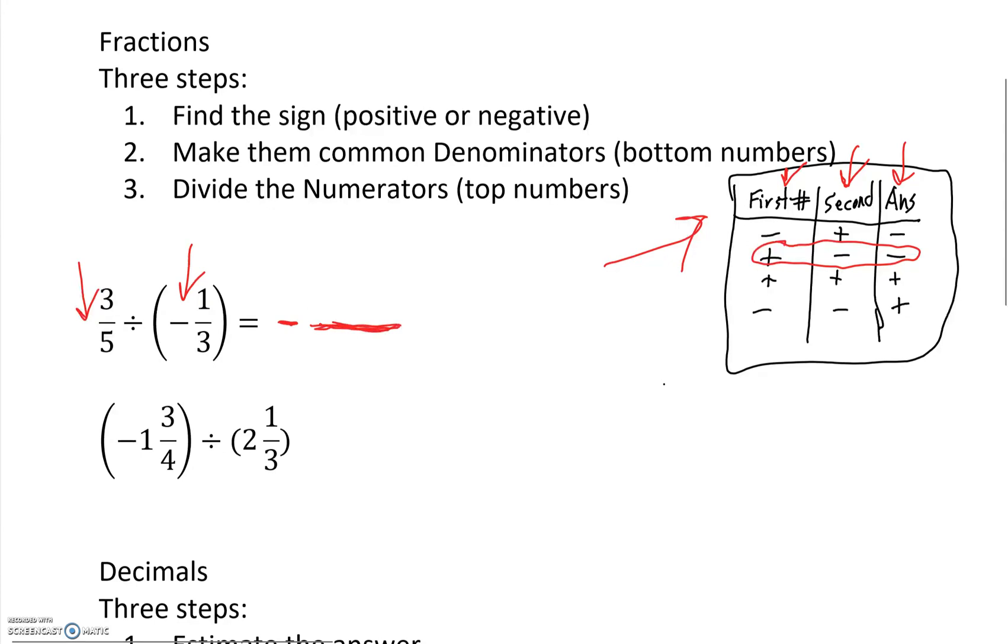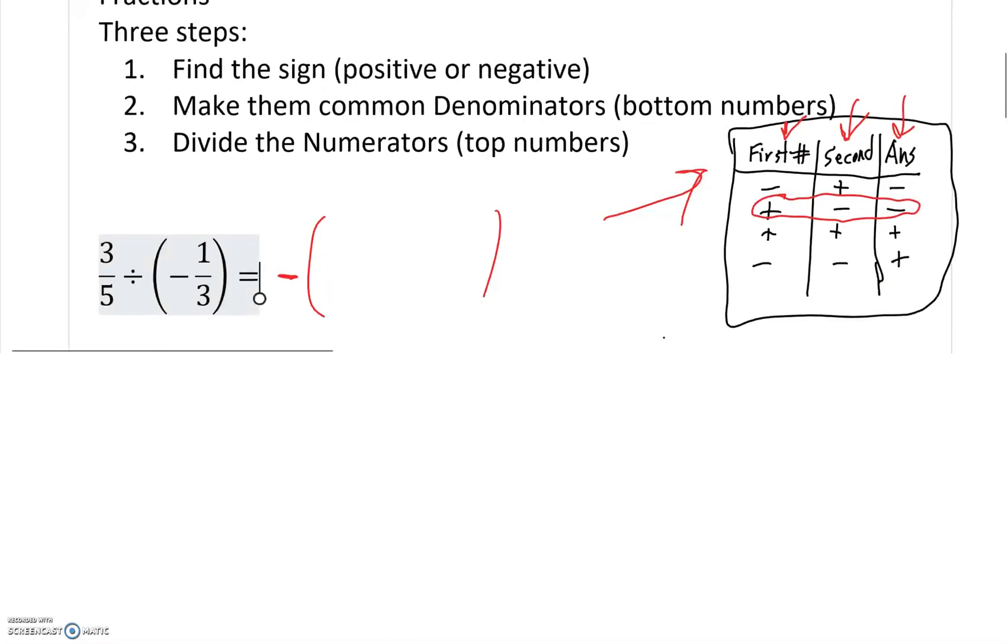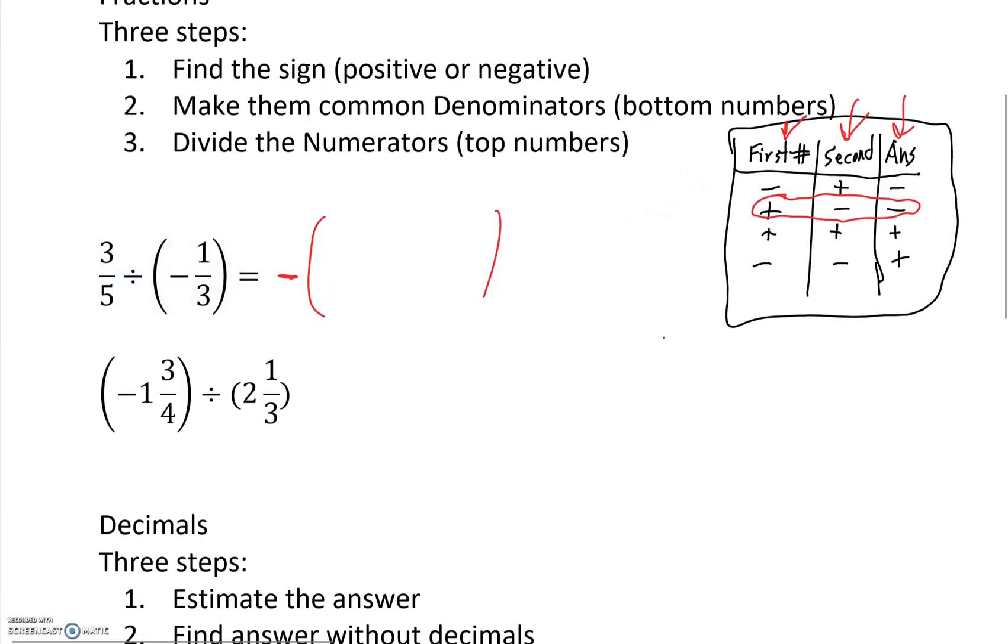Then we put our fractional line there. Now that we know that sign, we won't put the fractional line. Now we'll put everything else in brackets and we will deal with everything else in a second. So that's step one. Done.